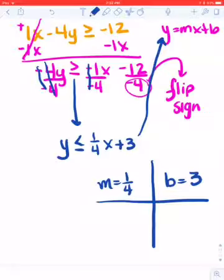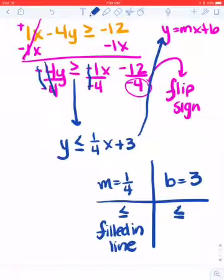My b value is 3. With that kind of inequality, I know it's going to have to be a filled in line.